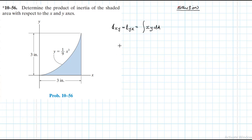This is called the product of inertia of an area with respect to the x and y axis. The units are the same as for moment of inertia of an area — units of length to the power four. In SI units this would be millimeters to the fourth or meters to the fourth; in imperial units, inches to the fourth or feet to the fourth.